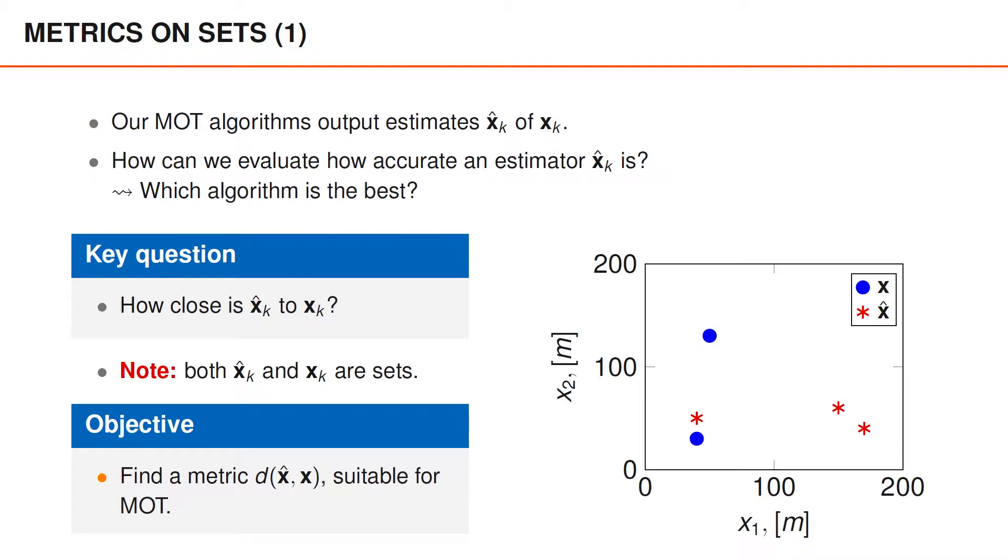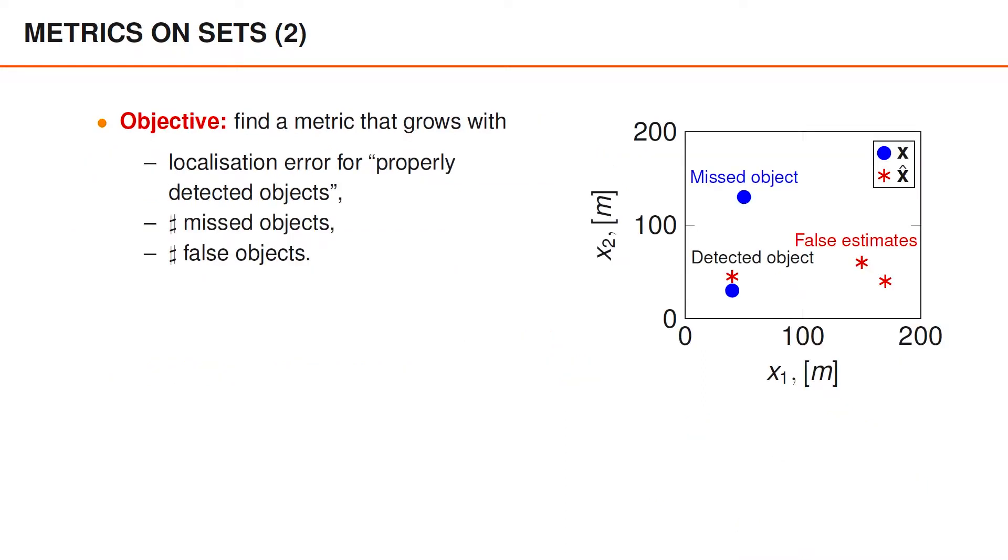Our approach to this is to look for metrics between sets that are suitable for evaluating multi-object tracking algorithms. The development of performance metrics is somewhat subjective, but you arguably want a metric that penalizes localization errors for the detected objects, as well as the number of false and missed objects.